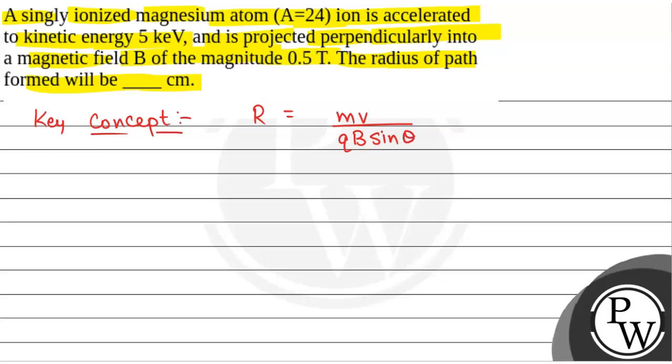Where m is the mass of the particle, v is the velocity, q is the charge on the particle, B is the magnetic field, and theta is the angle with which it is entering the magnetic field.